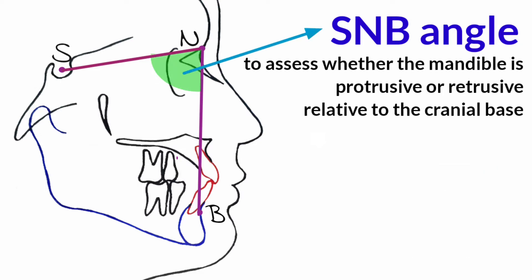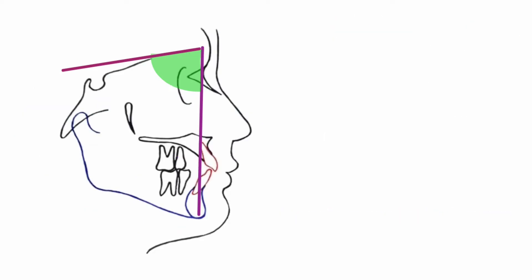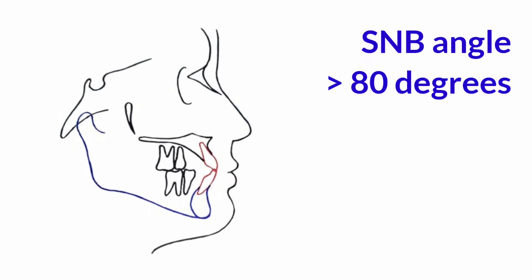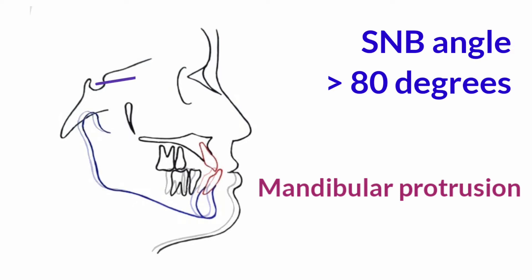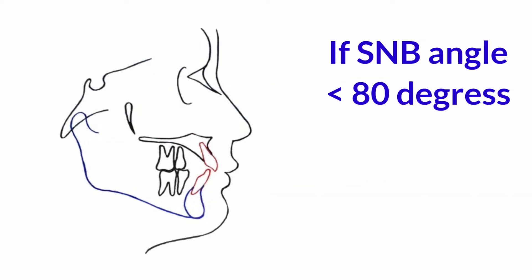This angle is used to assess whether the mandible is protrusive or retrusive relative to the cranial base. The SNB angle mean is 80 degrees. If the SNB angle is greater than 80 degrees, it suggests a protrusive mandible — the mandible is more forward than normal.